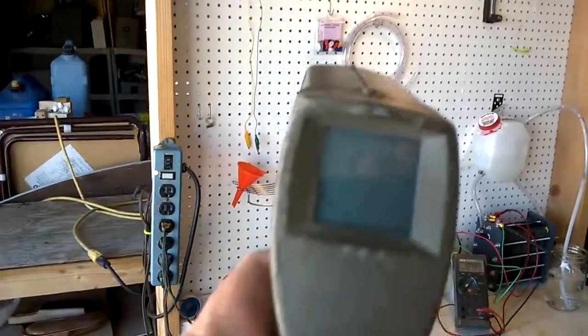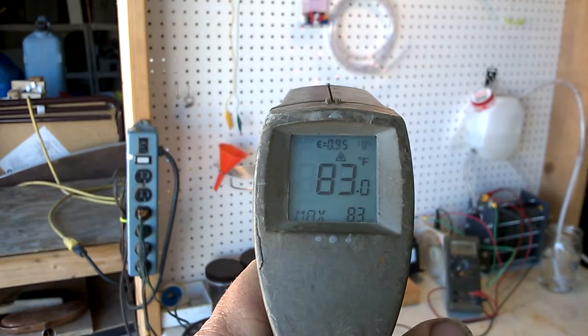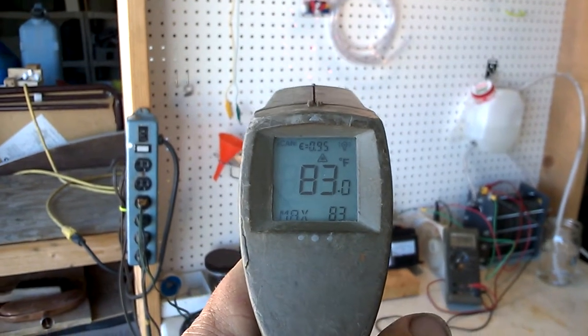Hello there, this is Cal here doing some testing with the new 50-plate electrolyzer and the method that I have come up with. Let's first zoom in here. We have 83 degrees on that pegboard, so that would be the ambient temperature.